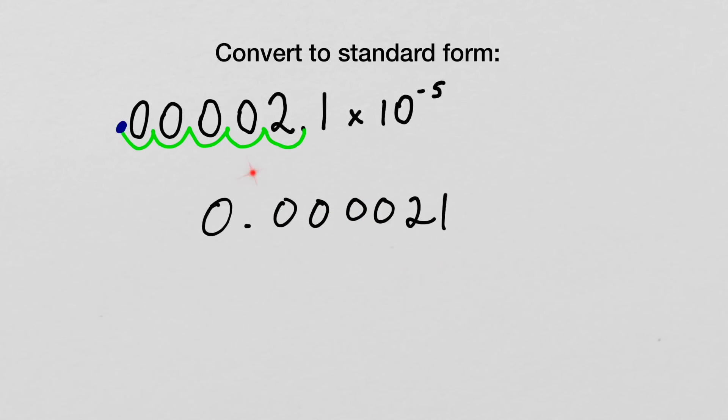So we have the answer in standard form. Remember, when you have a negative exponent, your answer is going to look like this. Negatives are small, and decimals are small.